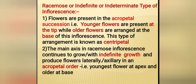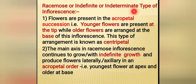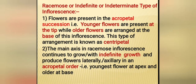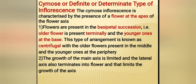These inflorescence types are explained in detail. Racemose is also called indefinite or indeterminate type of inflorescence because the growth of inflorescence axis is indefinite. Acropetal succession means younger flowers at tip and older at base - this arrangement is called centripetal, meaning order of opening is from periphery to center. Cymose is the definite or determinate type of inflorescence - growth of inflorescence axis is limited as the apex is utilized in flower formation.